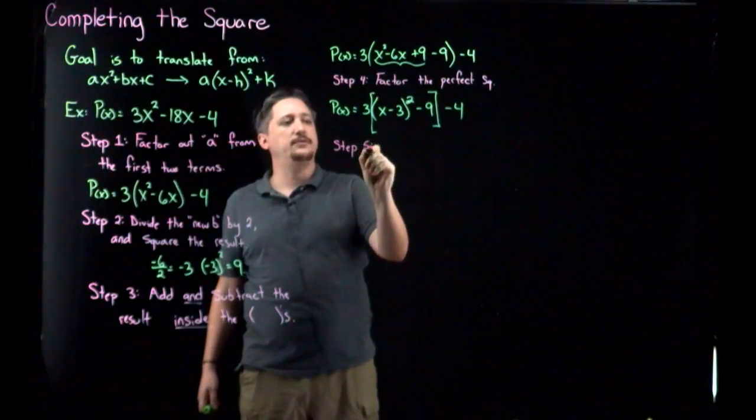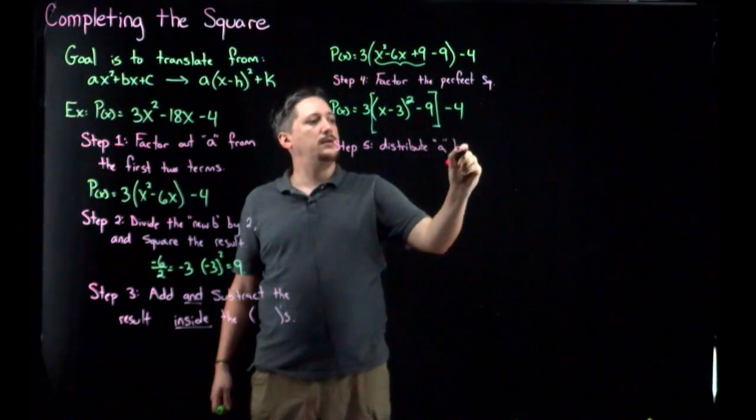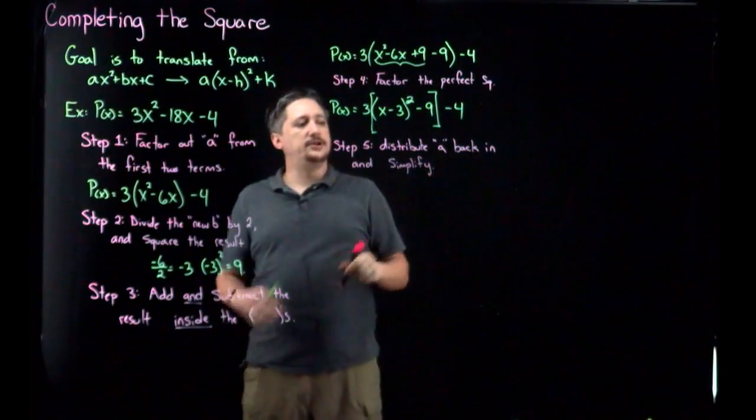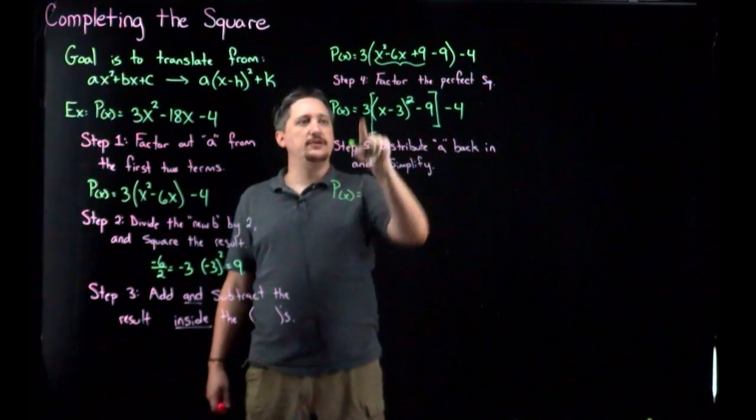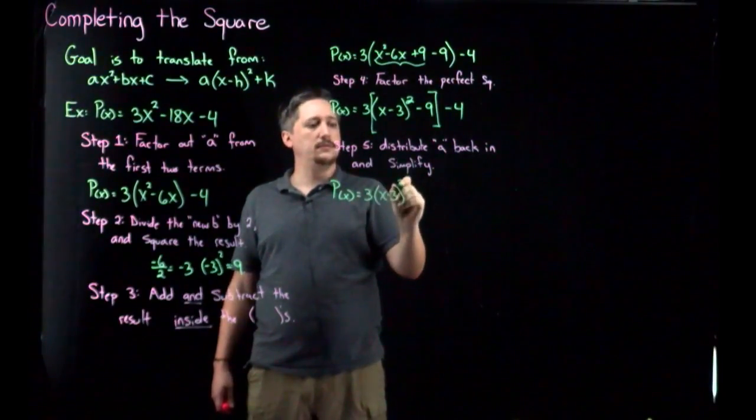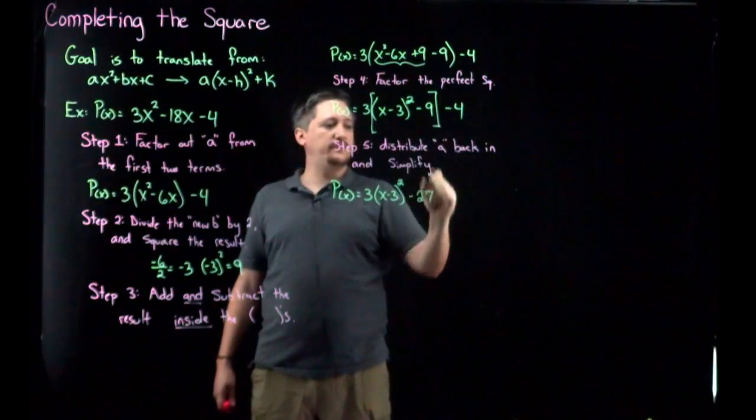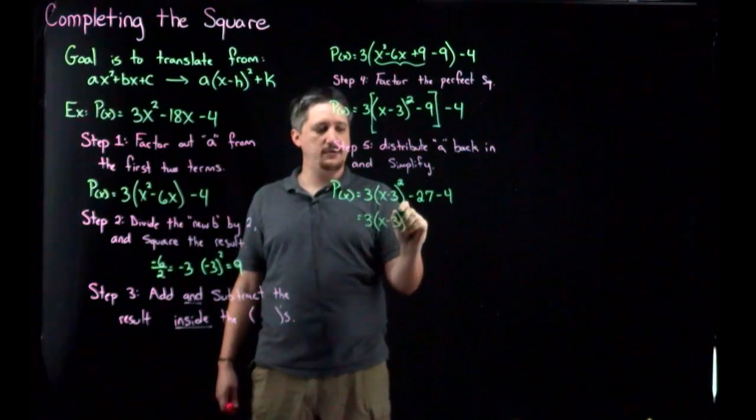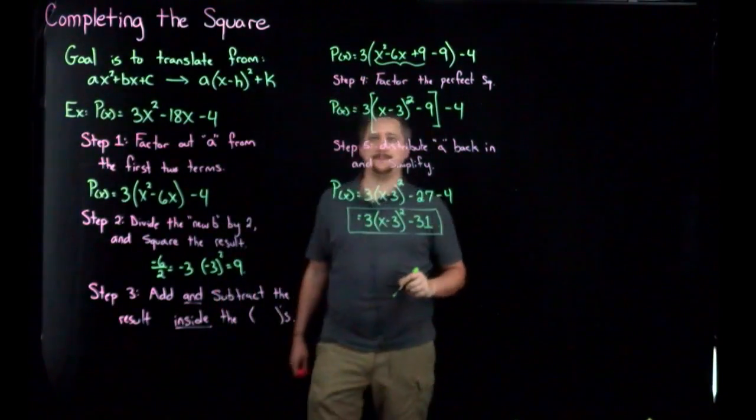Step five, which is our final step. Distribute the a back in and simplify. And to be clear when we say back in, we don't mean all the way inside the square, we just mean inside these brackets. So I'm going to get p of x equals three times that perfect square piece. So three times that. And I'm going to have minus three times nine, minus 27, minus four. And simplify, meaning combine like terms here. So I'm going to get three times (x minus three) squared minus 31. And that is the result of completing the square.